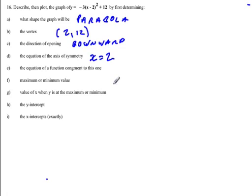And the equation of a function that's congruent to this one, it's any, you can pick anything you want, so y is equal to any quadratic equation where a is negative 3. So you could have anything like y equals negative 3x squared plus 7.